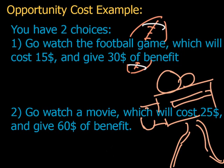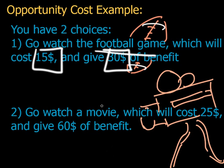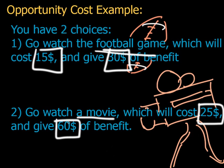Let's go through another example, trying to see how we can look at opportunity costs. Let's say we had two choices in this scenario. One, you could go watch a football game, which will cost you $15 and give you $30 of benefit. And two, you can go watch a movie, which will cost $25 and give you $60 of benefit.